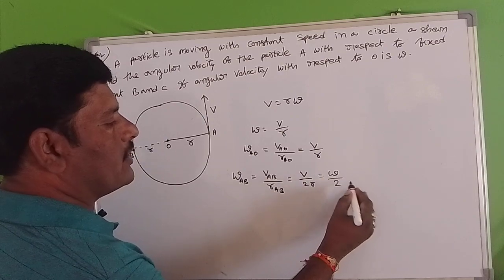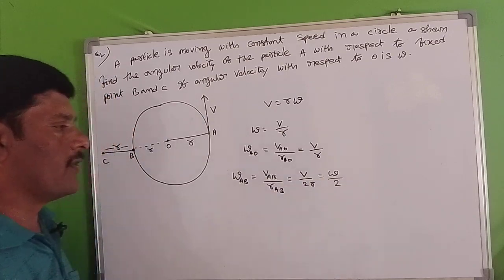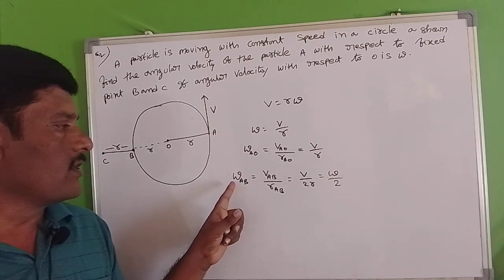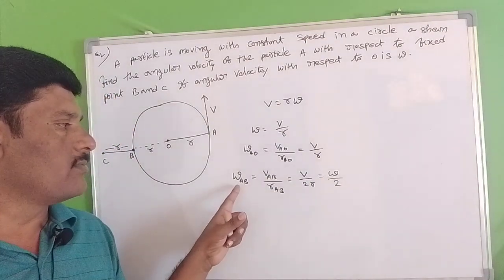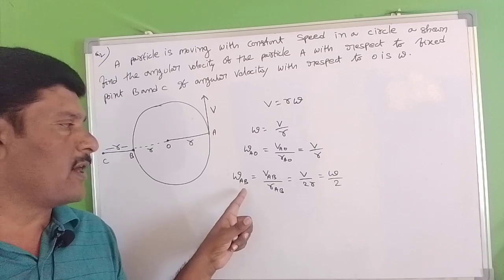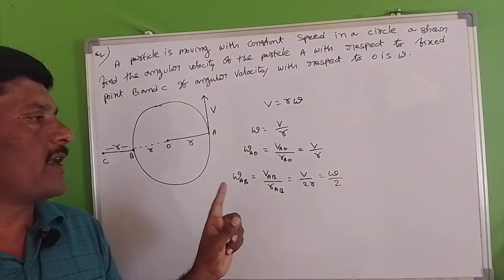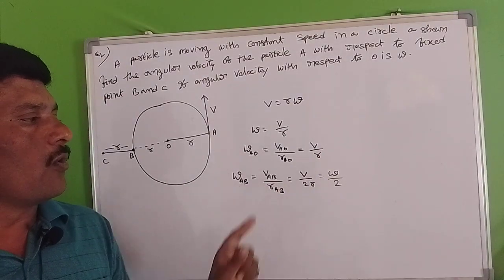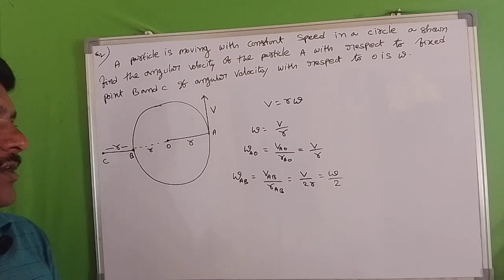We know that V by R is nothing but omega. So the angular velocity of A with respect to B equals V divided by 2R, which gives omega by 2. Therefore, the answer is omega by 2.